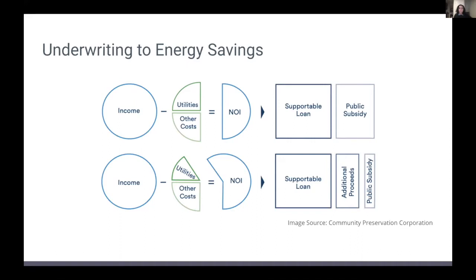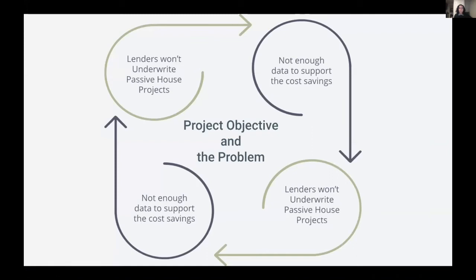Lower MNO costs could actually reduce the need for public subsidies. There is a typical chicken-and-egg situation at play: lenders won't underwrite the more expensive passive house projects because there isn't enough data to support the cost savings over time, but there isn't enough data because not enough lenders will underwrite passive house projects.